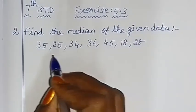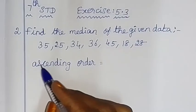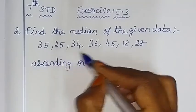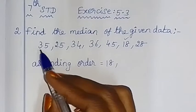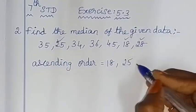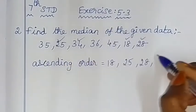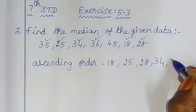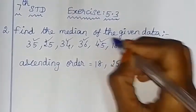First, arrange the data in ascending order — small to big. The numbers arranged are: 18, 25, 28, 34, 35, 35, 45.